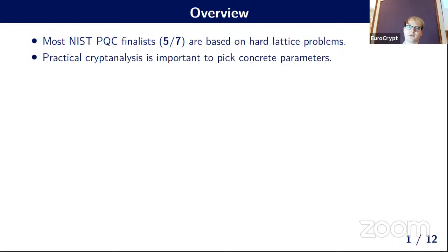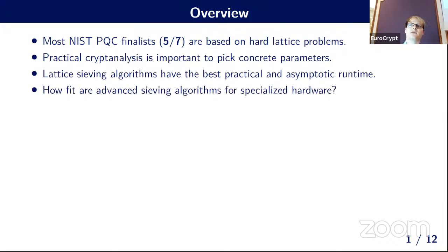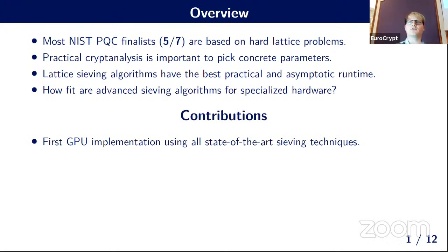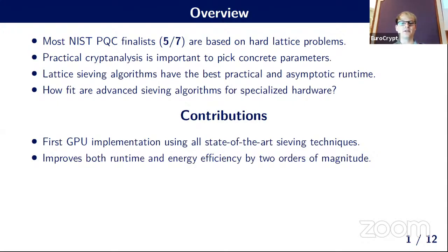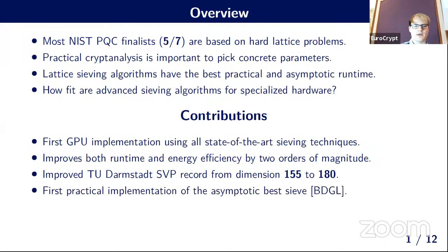The main question was: how well do advanced sieving algorithms fit specialized hardware? The contributions include the first GPU implementation using all state-of-the-art sieving techniques, improving both runtime and energy efficiency by two orders of magnitude compared to a CPU-only implementation. This was used to improve the SVP records from dimension 155 up to dimension 180. Additionally, the first practical implementation of the asymptotically best sieve, known as BGGL, is presented.